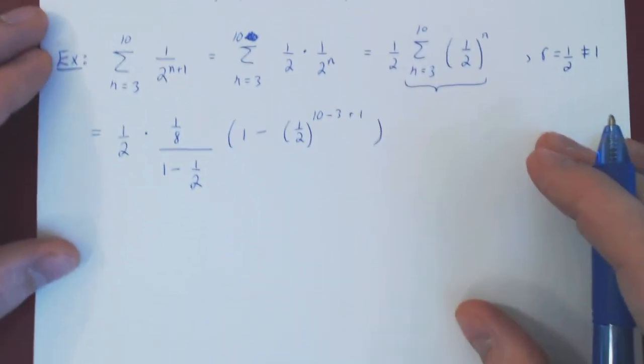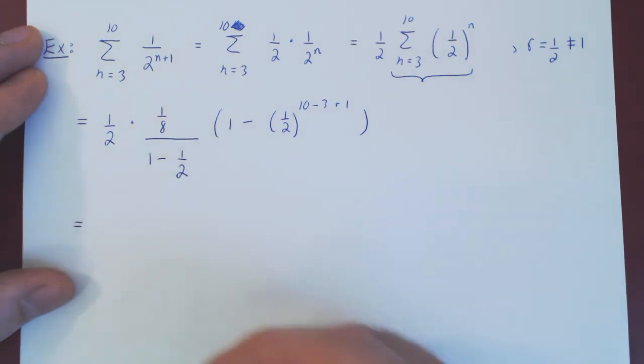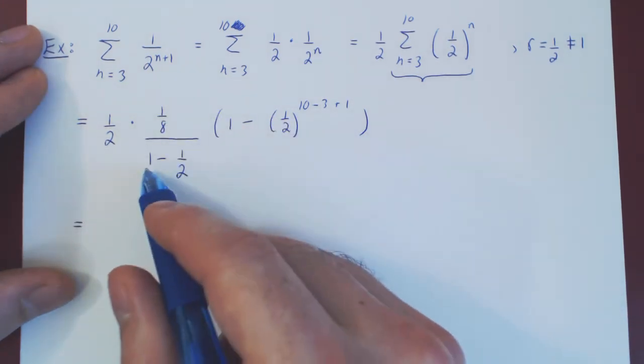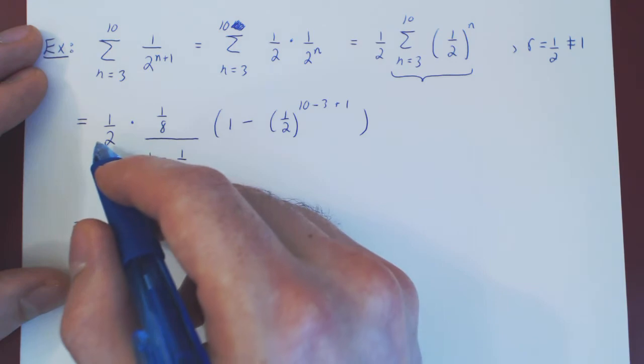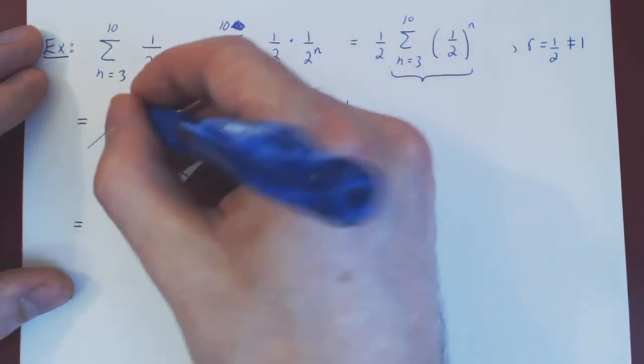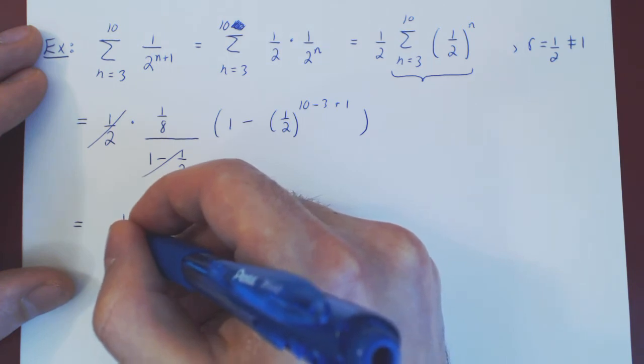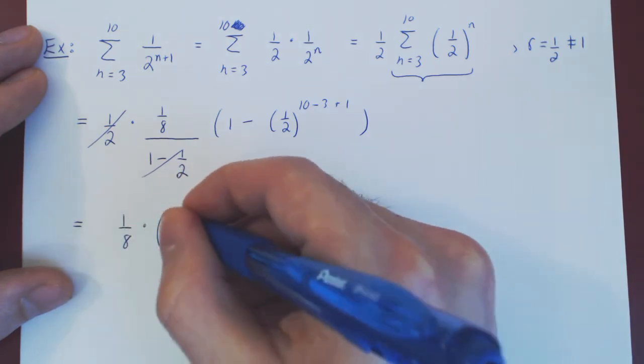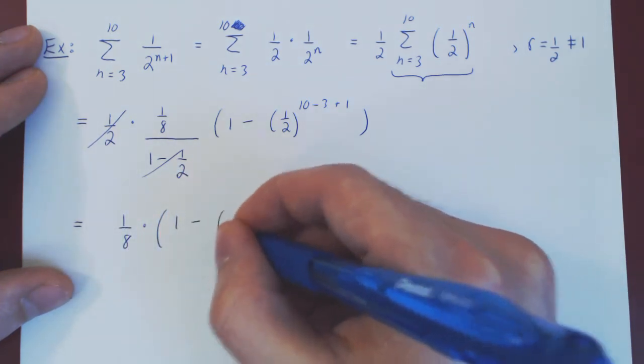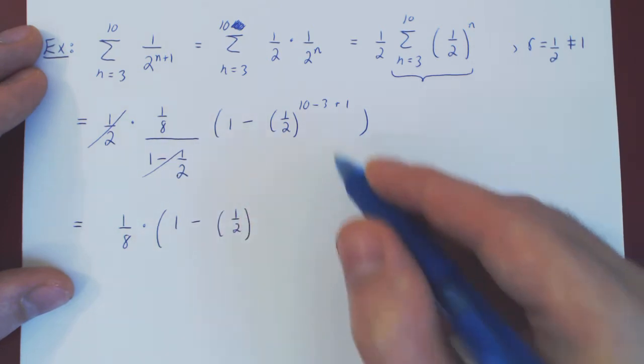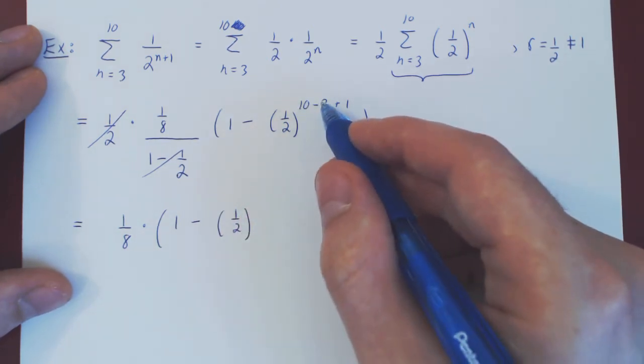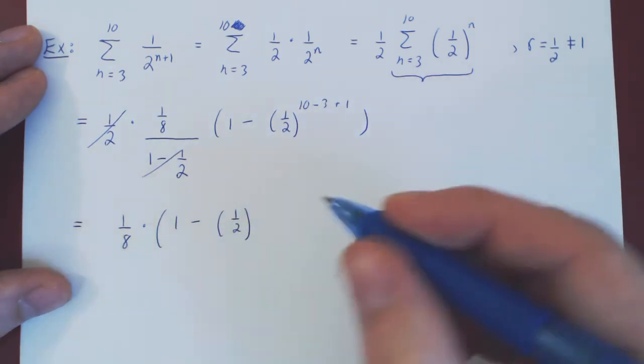And we can now simplify a little bit. 1 minus a half is a half, a half over a half is 1, so these two cancel. And we're left with 1 over 8, times 1 minus 1 half to the... Well, 10 minus 3 is 7, plus 1 is 8.